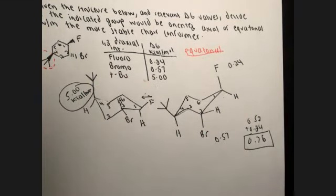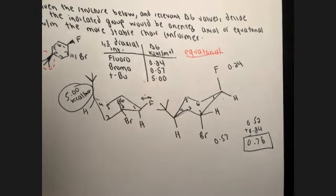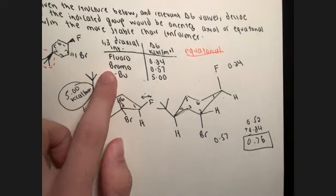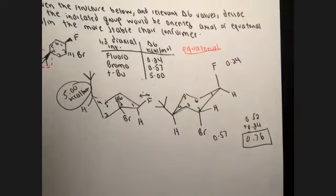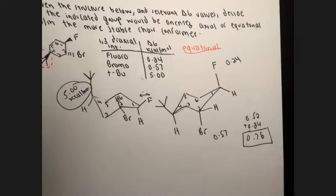You can use a quantitative approach: if the other two substituents have tiny delta G values (0.2 and 0.5) compared to the tert-butyl's 5 kcal/mol, that tert-butyl being axial is the deciding factor. That's a good review of chair conformers. Let's move on to chirality — we're starting on page 40.